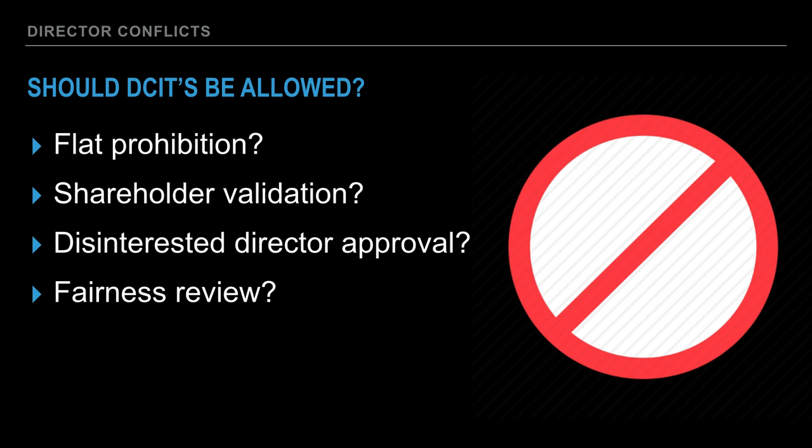There are a couple of different ways courts could have gone about this. We could think about a flat prohibition — meaning the corporation cannot enter into any transaction with any person or entity in which the director has a conflicting interest. So just no DCITs — if it's a DCIT, it's prohibited. As I mentioned with the venture capital example, that may be very short-sighted. It could prohibit a great many transactions simply because a director sits on more than one board or has relationships in multiple organizations.